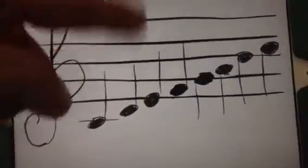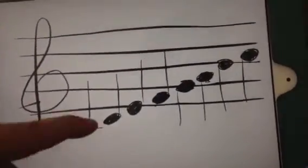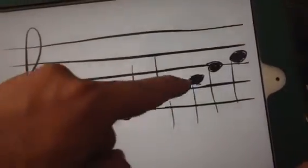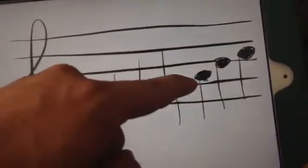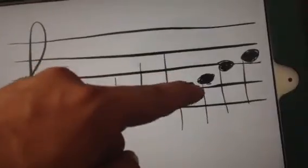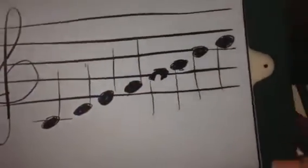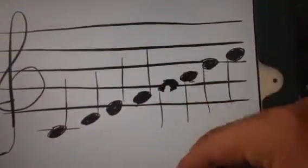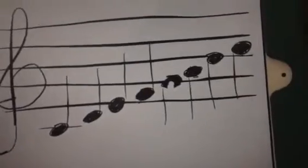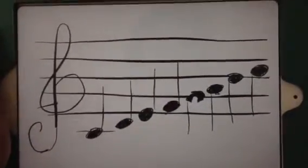Now, the stems — fun little fact. Stems are always pointing upward until you hit the G note right there. And then once you hit that line, everything is stems down. So that's what it looks like.